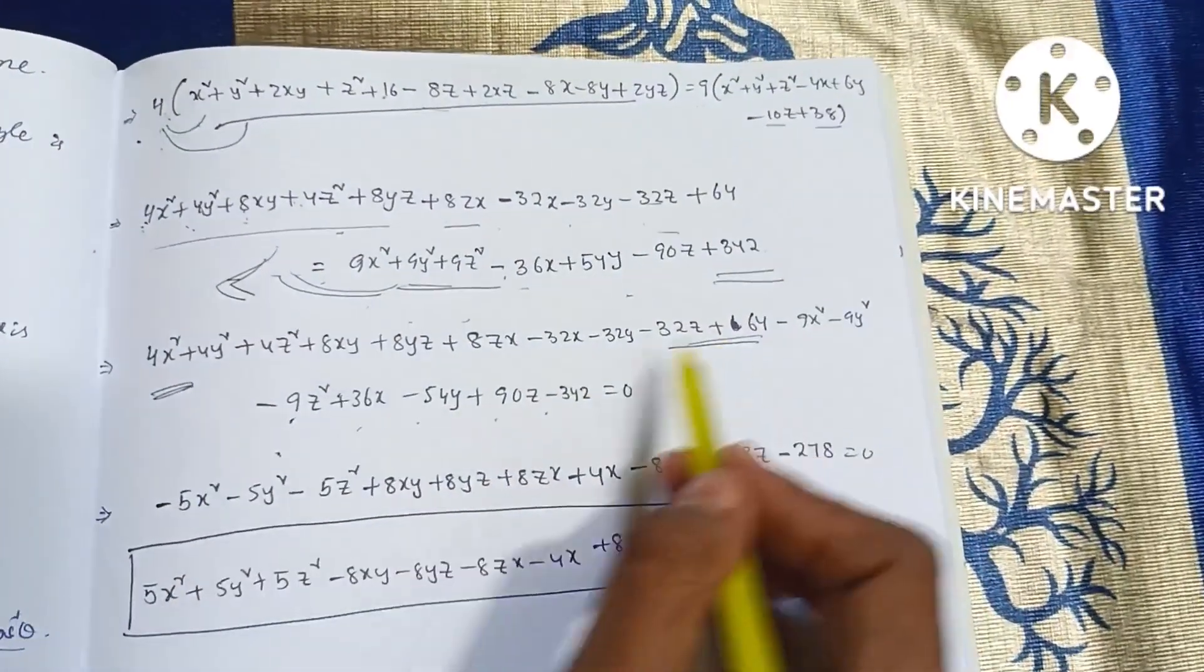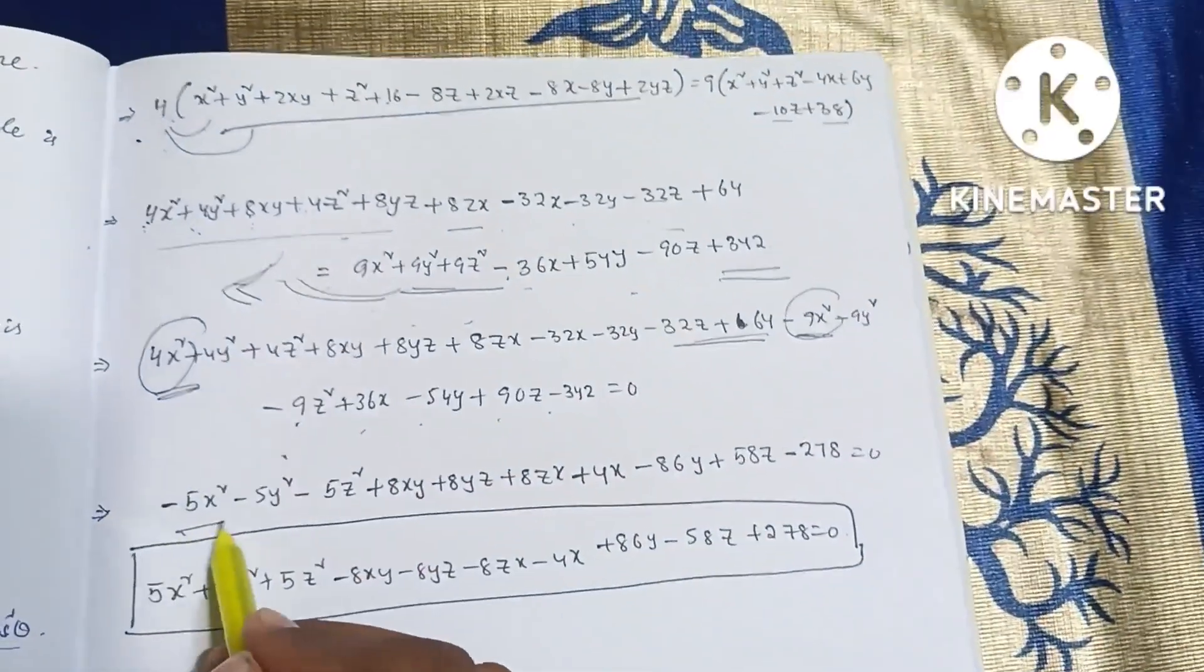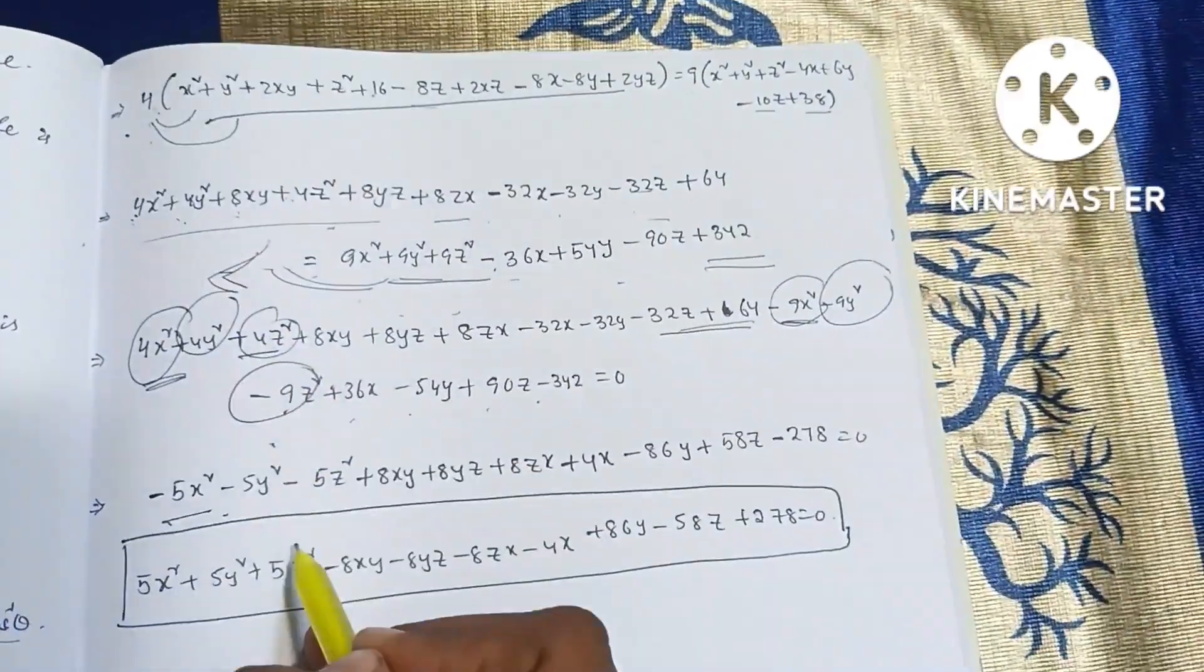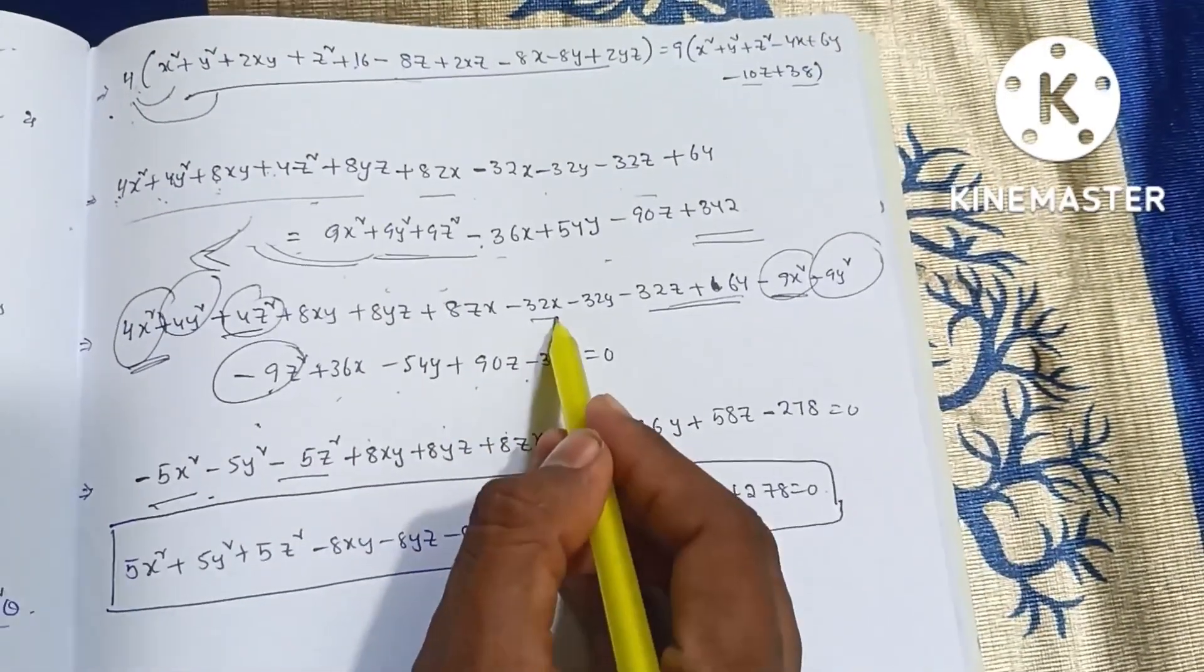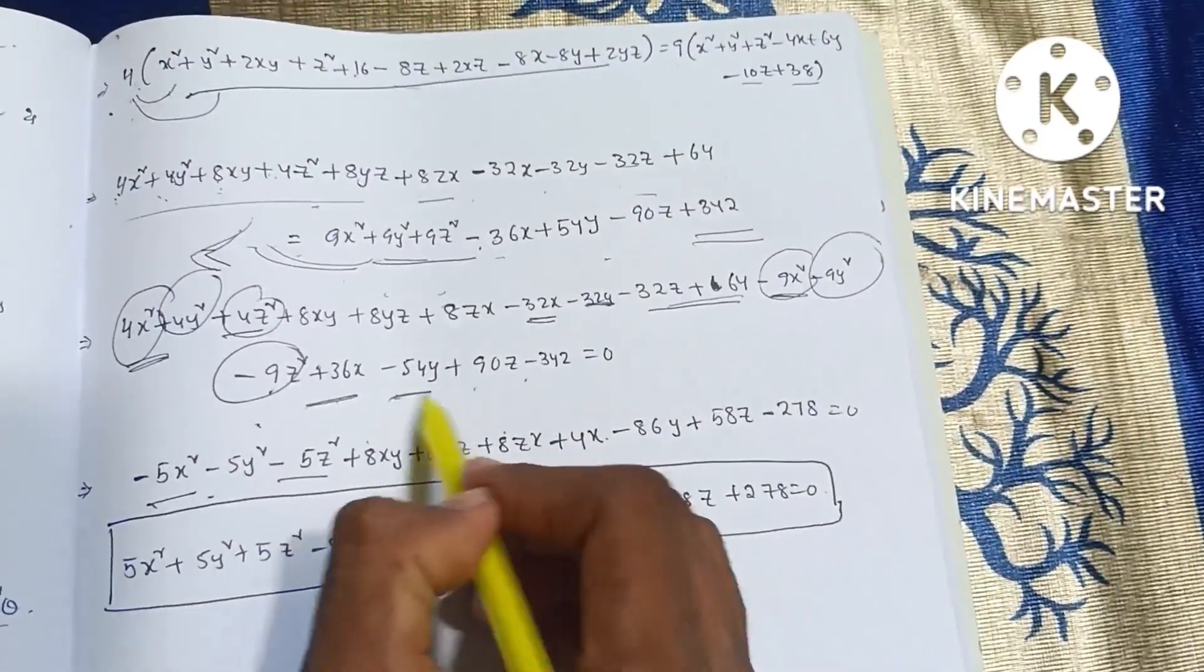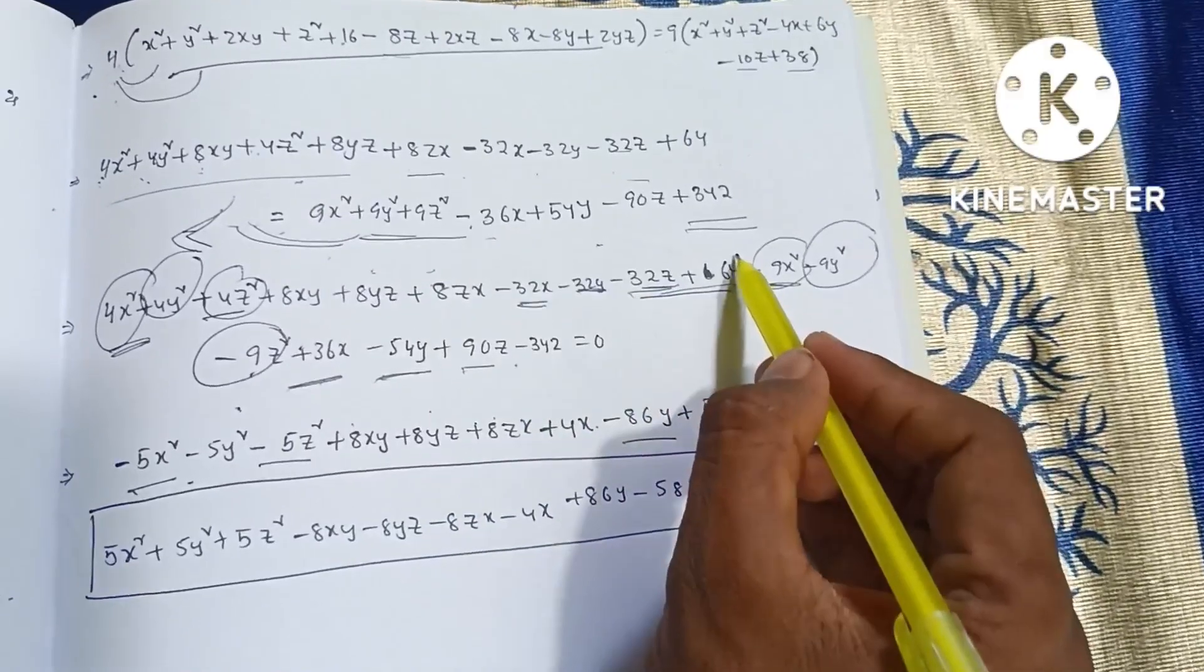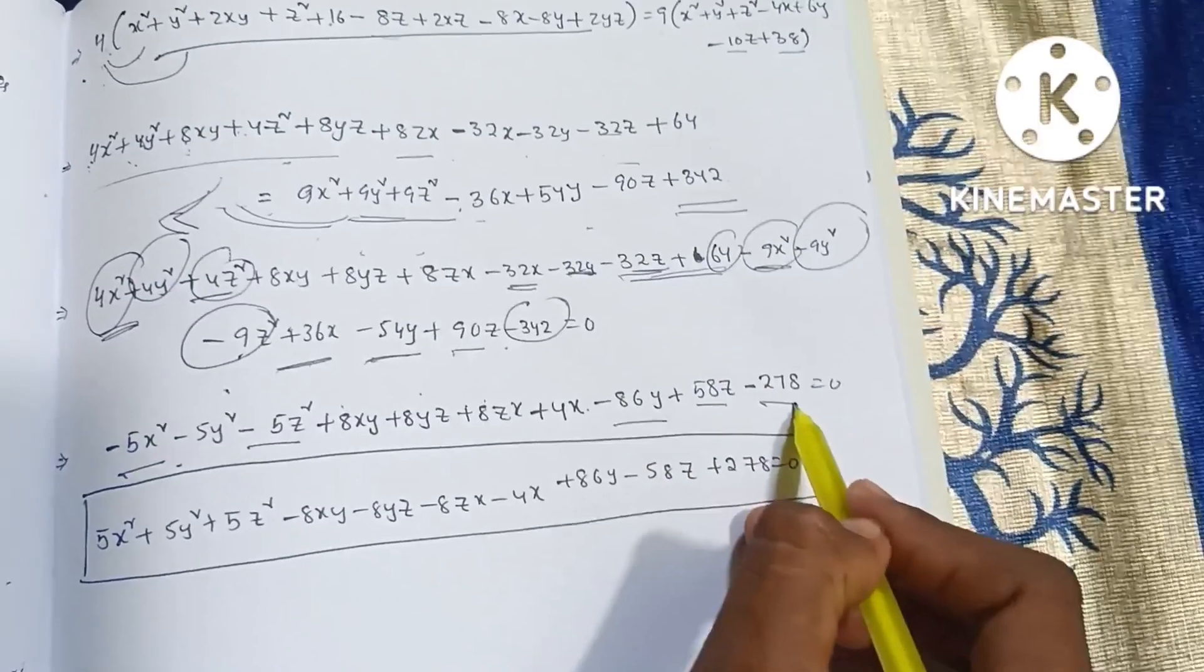So 4x square minus 9x square, and 4 minus 9 into minus 5x square. 4y square minus 9y square, and minus 5y square. 4z square minus 9z square, and minus 5z square. Plus 8xy plus 8yz plus 8zx. Minus 32x plus 36x, and plus 4x. Minus 32y minus 54y, and minus 86y. So minus 32z plus 90z, and 58z. 64 minus 342, and then minus 278 is equal to 0.